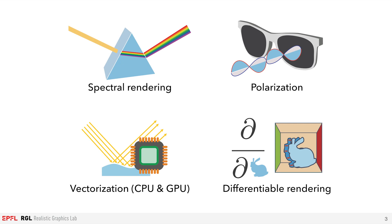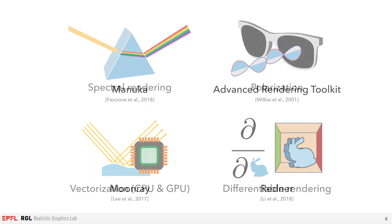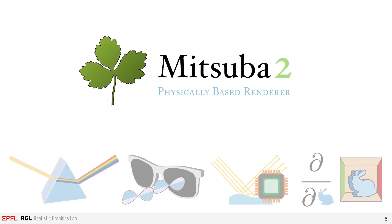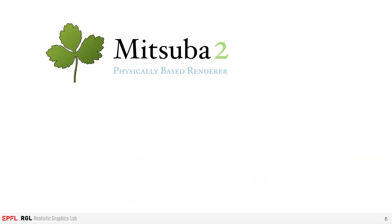Adding any of these features to an existing rendering system would typically involve a complete redesign. In fact, people have been building individual systems to support each of these features, sometimes spending years of engineering efforts. With Mitsuba 2, we present an architecture which is able to support all of these and more.